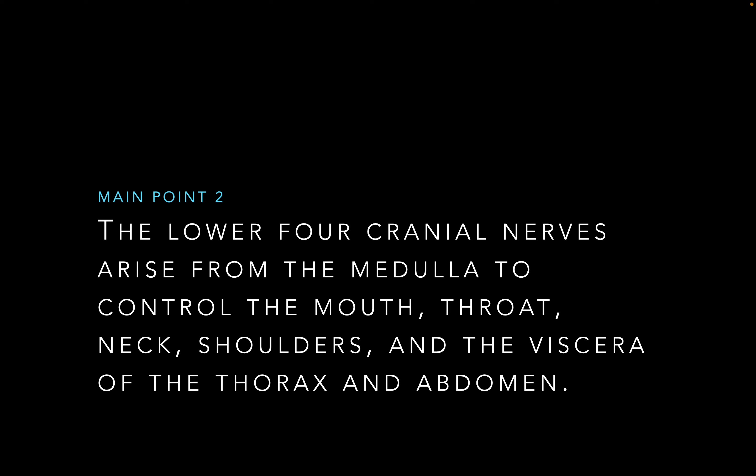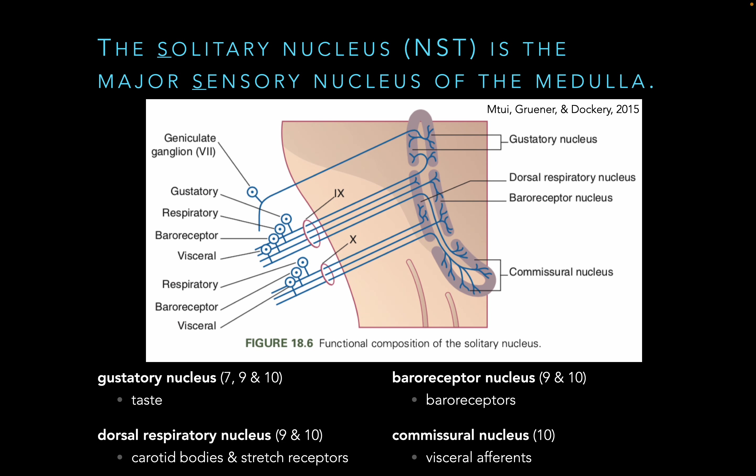We'll go through cranial nerves 9 through 12 now. Those lower four come off of the medulla and collectively control the mouth, the throat, neck, shoulders, and then the viscera of the thorax and abdomen. One of those cranial nerves doesn't come off the medulla — that would be the accessory nerve. First, let's get the important nuclei out of the way.